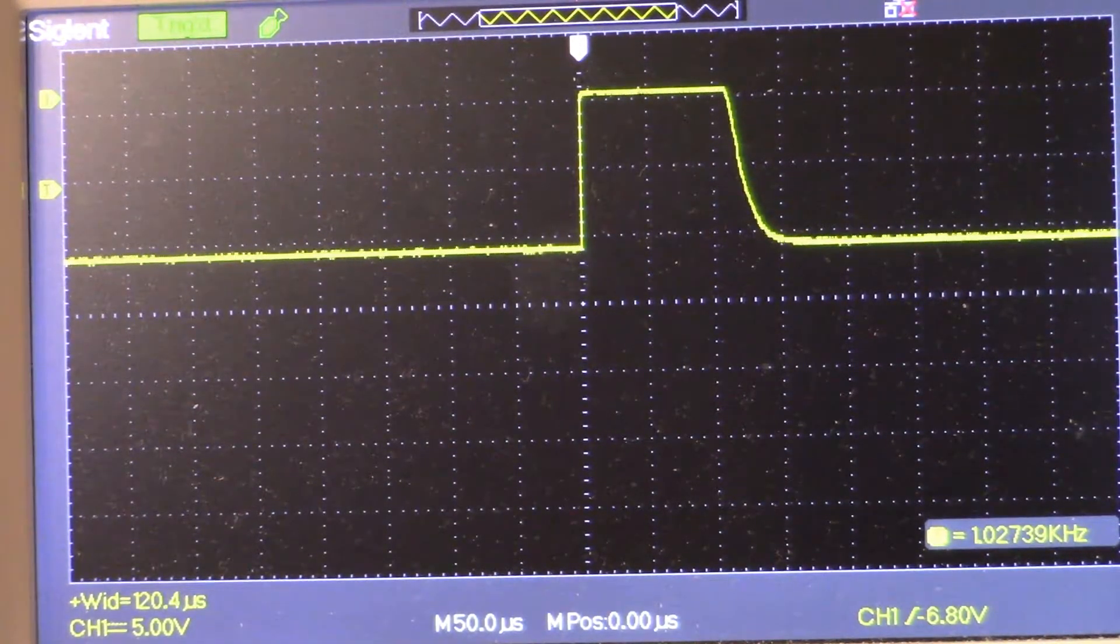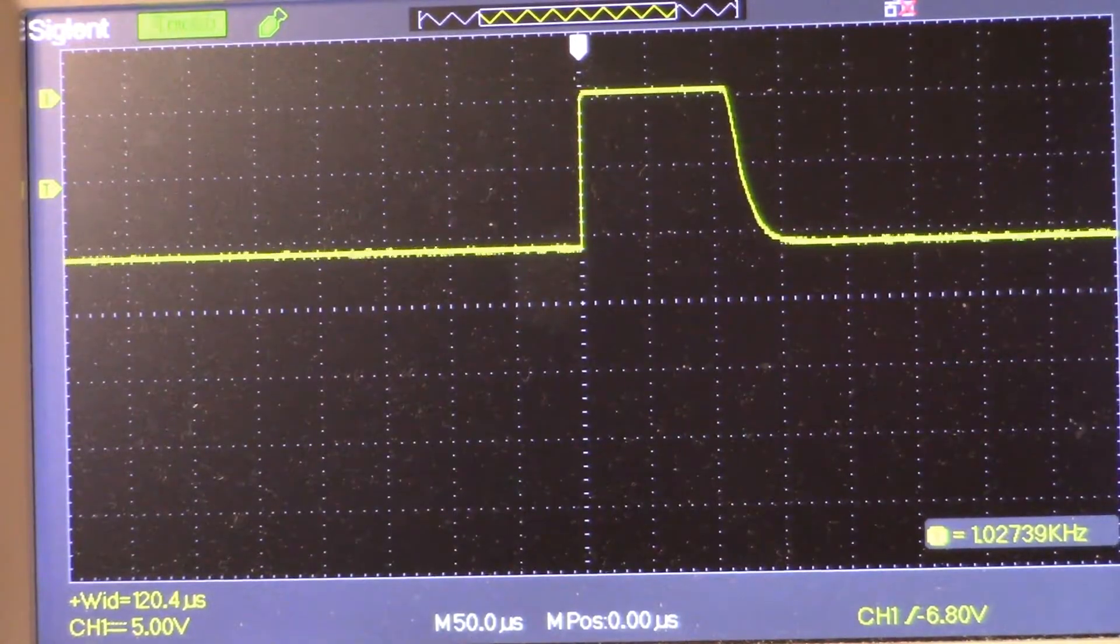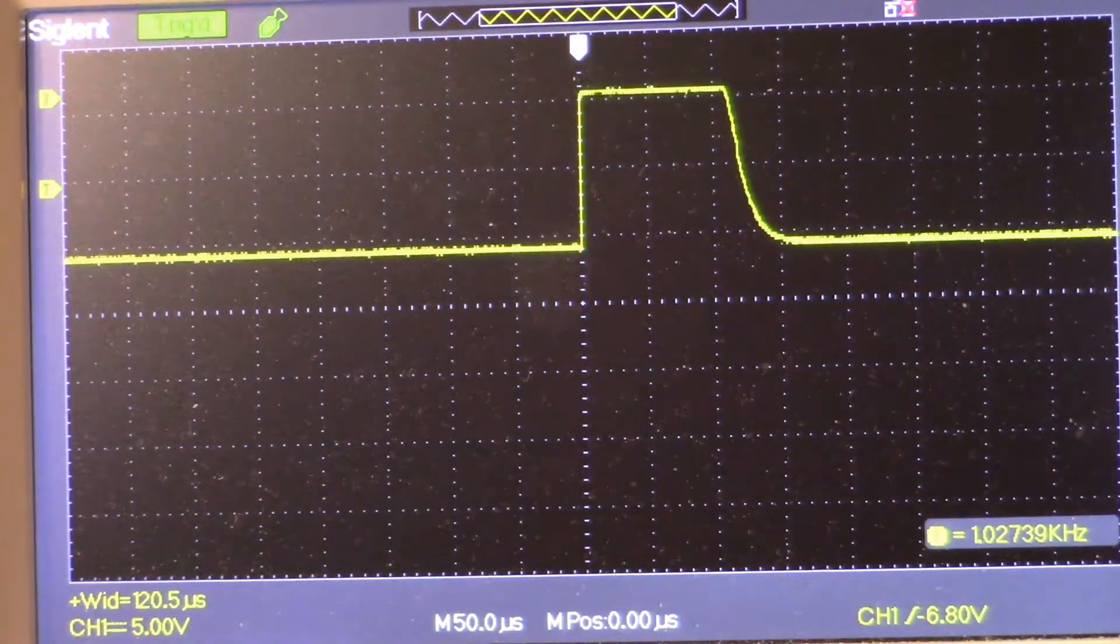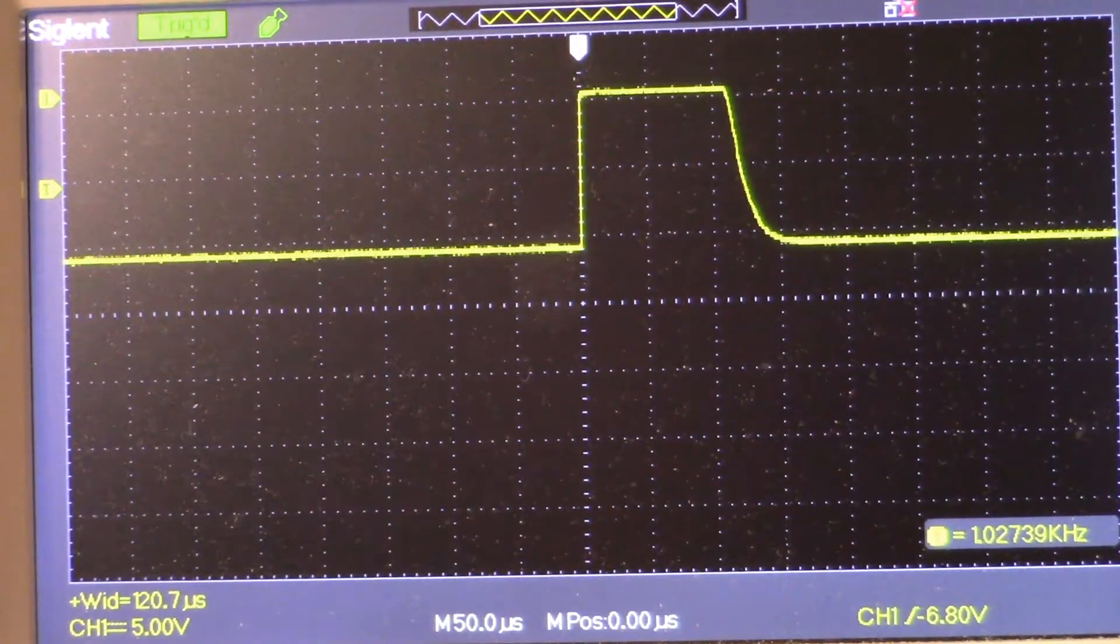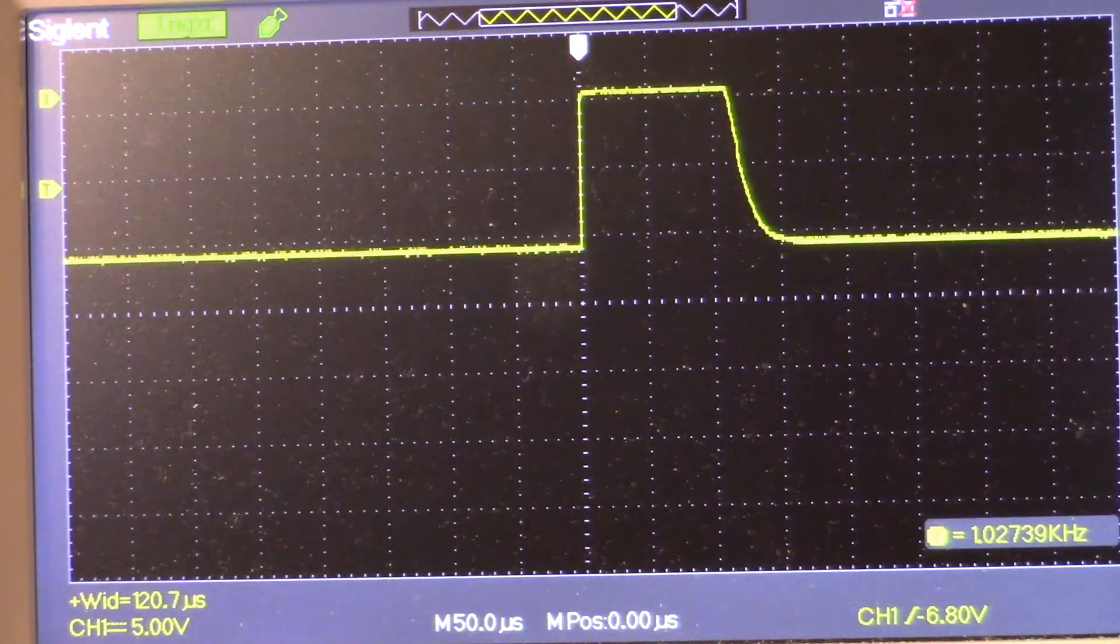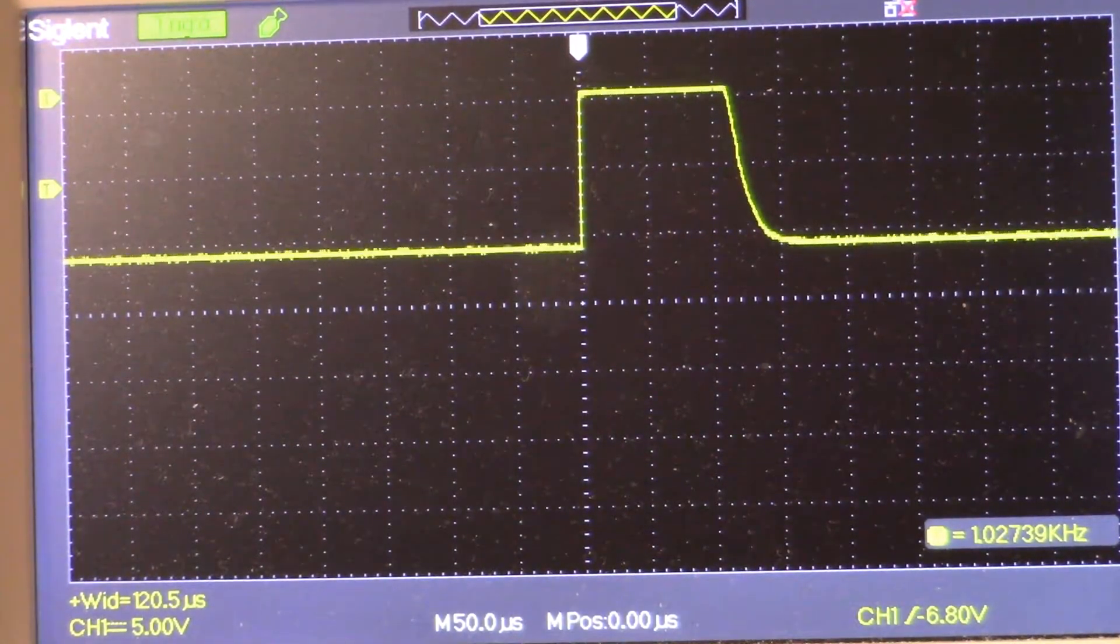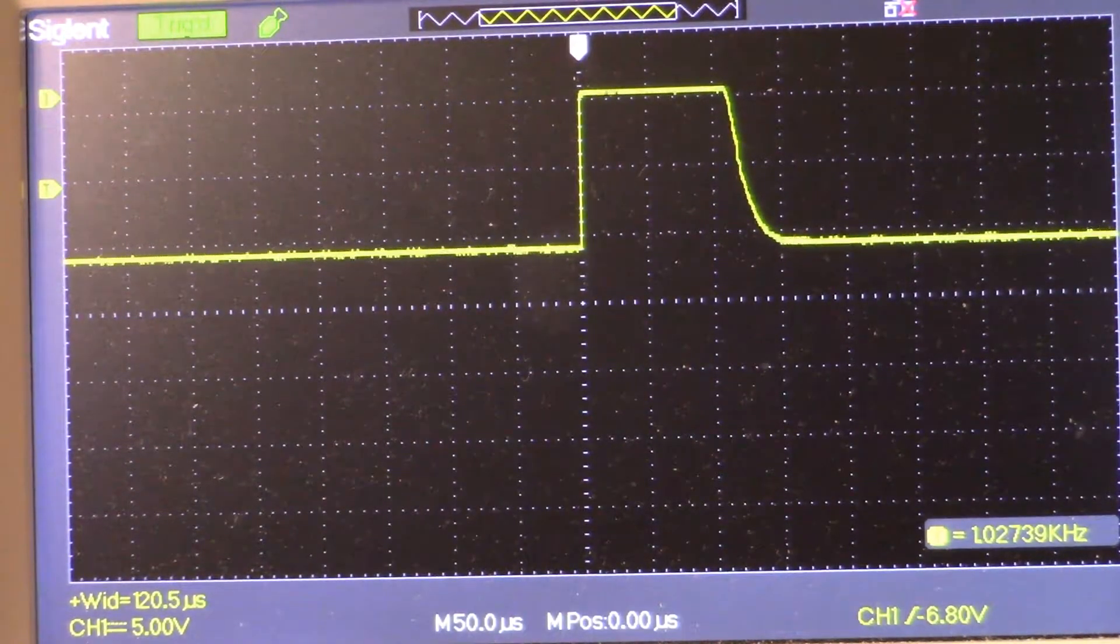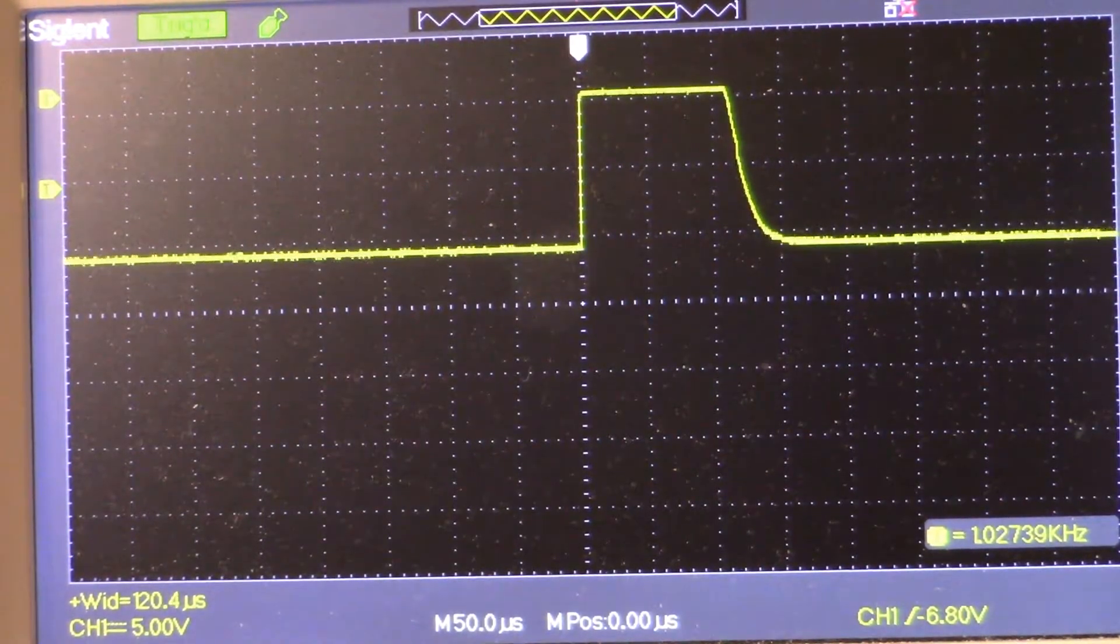And you can see on screen that right now we are at 1.027 kHz and the pulse width is 120.6 microseconds. Okay, so those are both pretty much dead on according to the information from the Geotech forum.